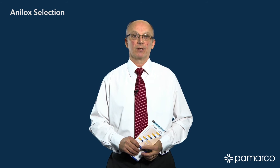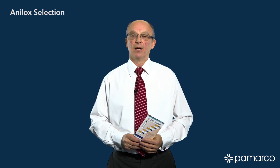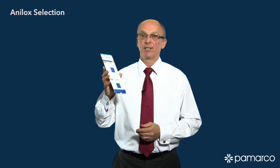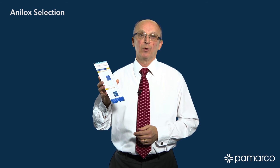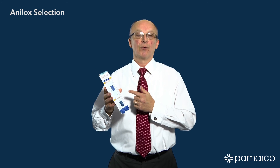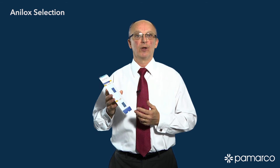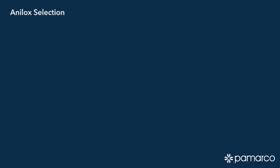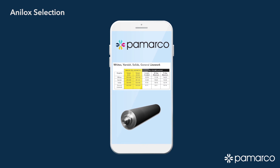At Pamarka we have data sheets for Anilox selection which are industry specific — for example for corrugated board printing, flexible packaging, or narrow web label printing. We also have screen selectors which can be used for selecting the right screen and the right cell volume in relation to the graphics to be printed. There's also a Pamarka app which can be downloaded onto your iPhone or iPad.